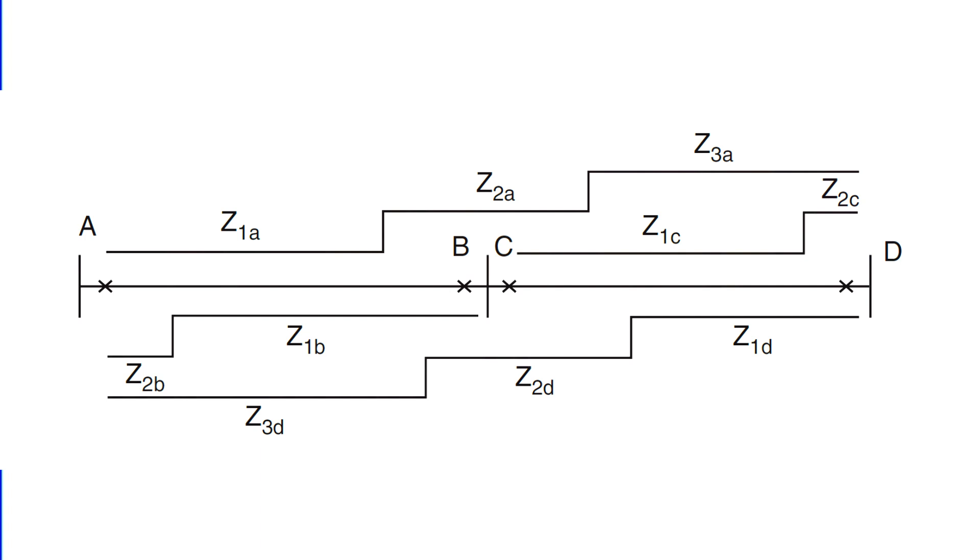Moving on to zone 2, or Z2A. This zone steps in to cover not only the remaining 20% of the line AB, but also extends to 20% of the adjoining line. As we delve deeper into the specifics of Z2A, it's crucial to understand its strategic importance in the overall network protection strategy.